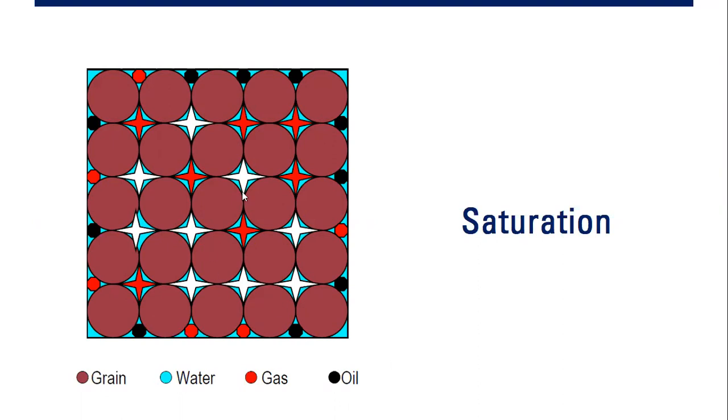This is a depiction of saturation. You can see the grain, the rock grain, and the water in blue color, gas in red color, and oil in black color.